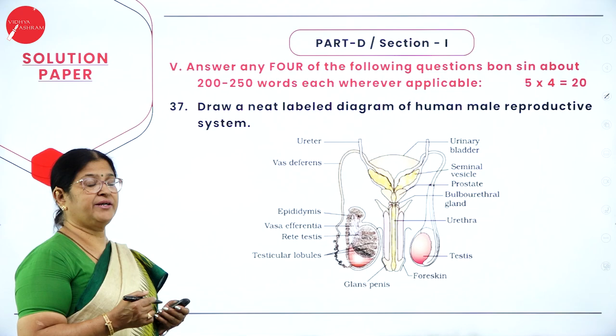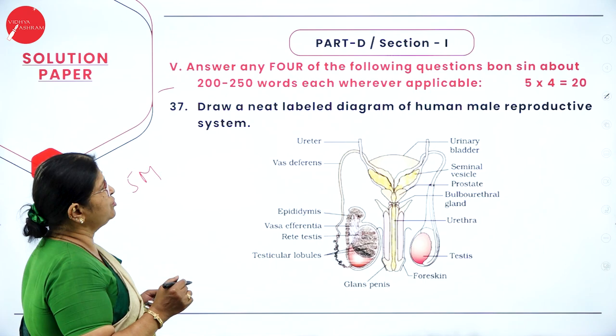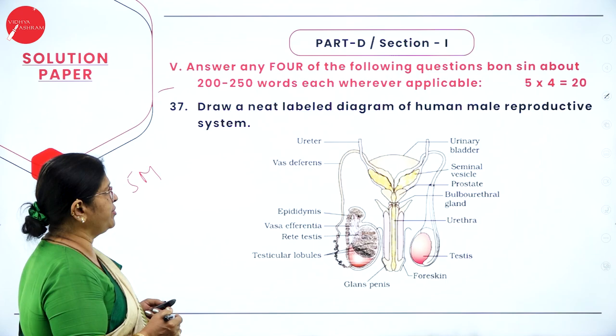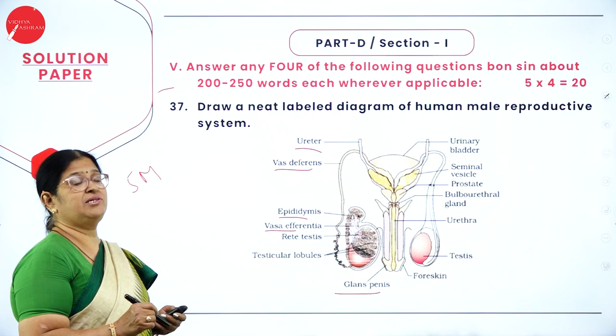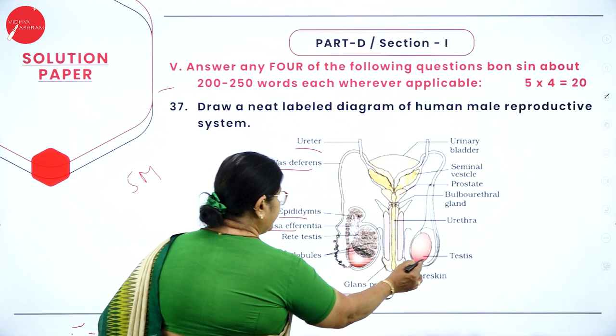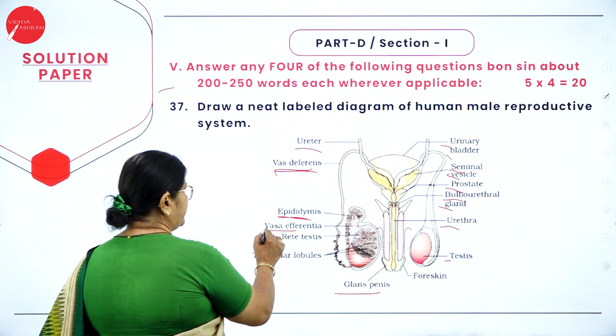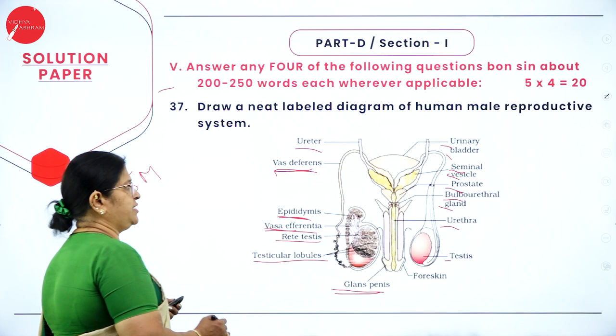Moving on to Part D section 1 — fifth main, five-mark questions. Question 37: draw a neat labelled diagram of the human male reproductive system. The testis is located extra-abdominally in a pouch called scrotum. Label at least 8 to 10 parts including: testis, urethra, bulbo-urethral glands, prostate glands, seminal vesicle, urinary bladder, ureter, epididymis, vas deferens, vasa efferentia, rete testis, testicular lobules, and glans penis.